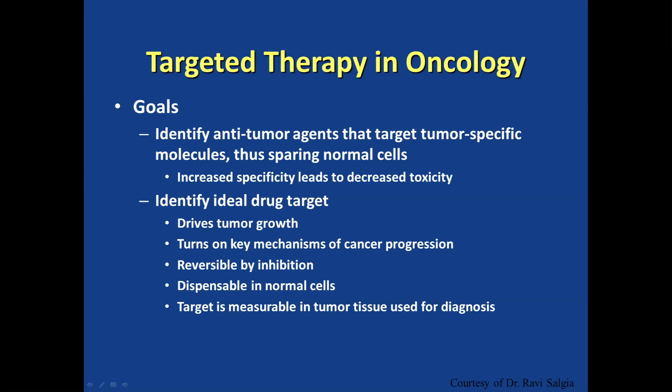The big buzz in oncology is targeted therapies — precision medicine. There have been great success stories and some missteps. The key is that you need a good target. The hope for targeted therapy is that with a good target, you can selectively kill cancer cells and spare normal cells. What makes a good target? You want to identify a gene or protein that drives tumor growth, that you can easily inhibit with your drug, that is dispensable in normal cells, and that you can measure to select patients who have the target.